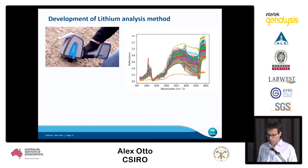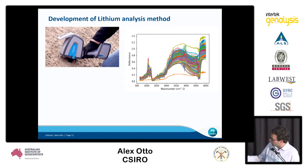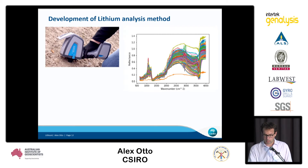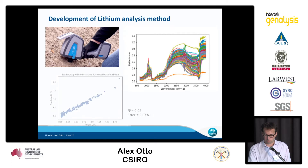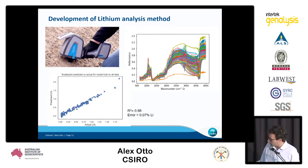We removed a couple of obvious outliers and used PLS models. Our result is pretty good — an R² of 0.98.